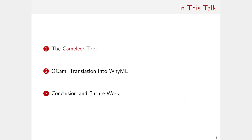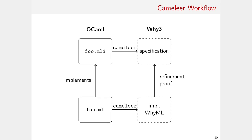Now let's focus on the Camelier tool itself. I'll describe the architecture, then provide details about translating annotated OCaml code into WhyML — the language of the Why3 verification framework — and conclude with closing remarks and future work. From a high-level point of view, in this diagram, the left-hand side represents the OCaml dimension and the right-hand side represents the Why3 dimension. The solid boxes represent what the programmer must write by hand, and the dashed boxes represent what is automatically translated.